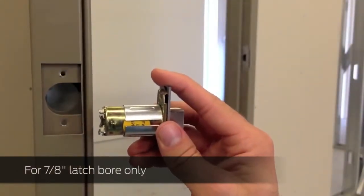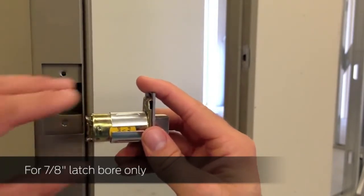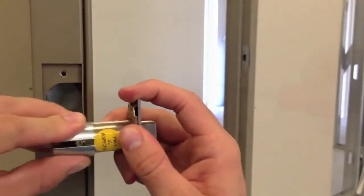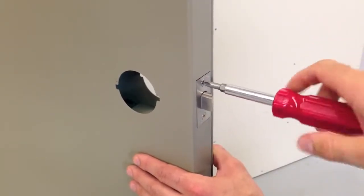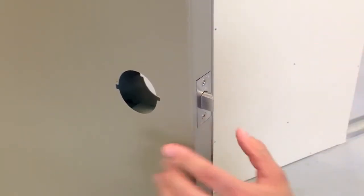For doors with a latch bore smaller than one inch, remove the metal sleeve from the latch. Secure the latch using the two smaller, self-tapping screws. Ensure the bevel of the latch is appropriate for the swing of the door.